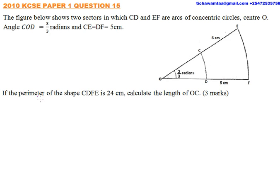We are given the length CE and DF as 5 cm. So we are required to find the length of OC given that the perimeter of CDFE is 24. We start by saying the perimeter that we are given, and this is X cm.